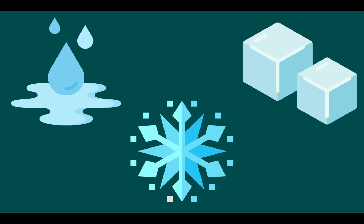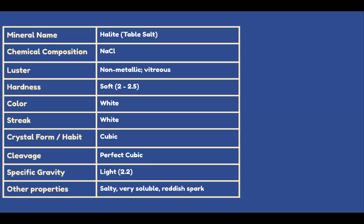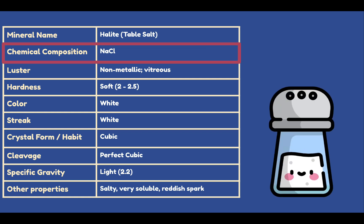Another example of a mineral is halite, or table salt. This table shows properties of the mineral halite. It is composed of sodium and chlorine, hence the NaCl symbol, which is read as sodium chloride.